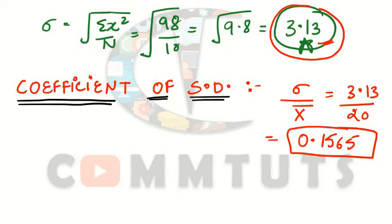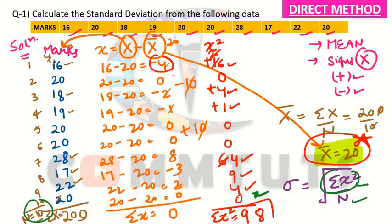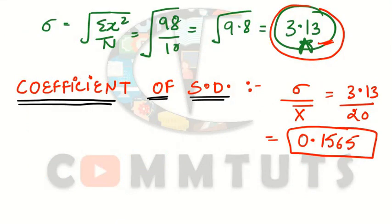To summarize the direct method for individual series: you are given a series, you calculate the arithmetic mean, then use the mean to find deviations, then square the deviations, sum them to get Σx², and apply the formula σ = √(Σx² / N). For the coefficient, divide σ by the arithmetic mean.